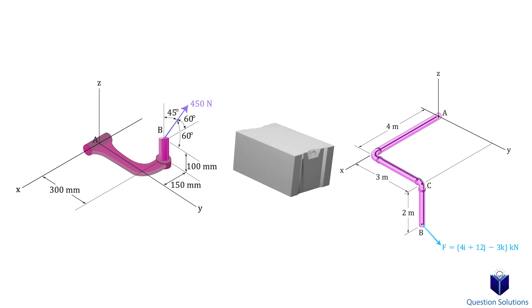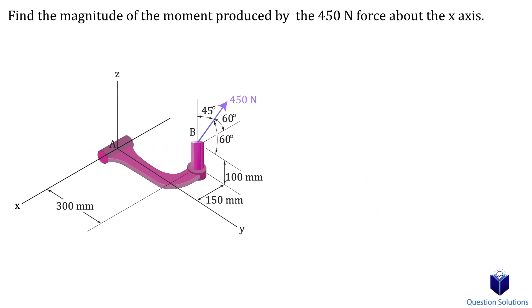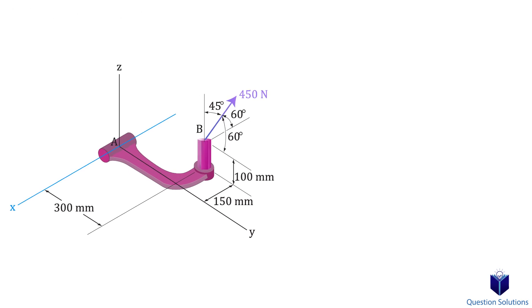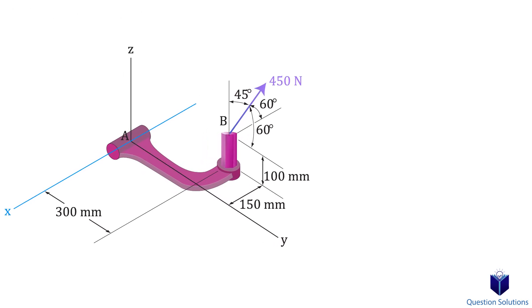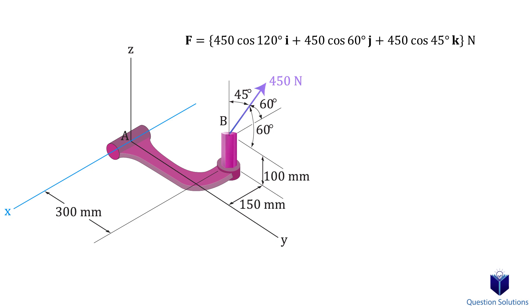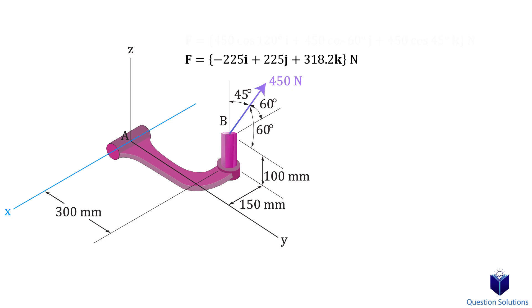Let's take a look at a problem where we have a force applied at one end of this contraption and we need to find the moment created about the x-axis. We'll use vector analysis since the force is given with coordinate direction angles, so it's easy to express in Cartesian form. We take the magnitude of the force and multiply it by the cosine of each angle. Note that the angle for the x-axis is given with respect to the negative x-axis, so we use 120 degrees for the positive angle.